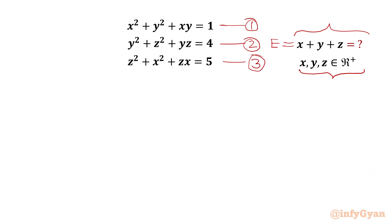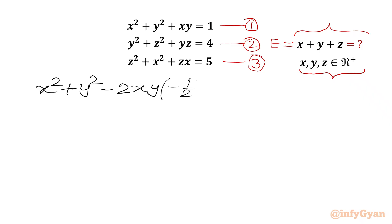I will begin with the given first equation. I can write the first equation as x squared plus y squared, then there is an x·y term. I will write minus 2xy, and then I need to multiply with minus one half, so that the value will be unchanged: x·y. The right-hand side is 1, which I will write as 1 squared.